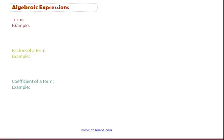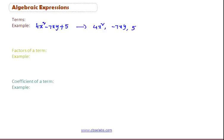Now we are going to learn about terms. Consider the algebraic expression 4x square minus 7xy plus 5. This algebraic expression is formed by adding three parts — they are 4x square, minus 7xy, and 5. These three parts are called terms.